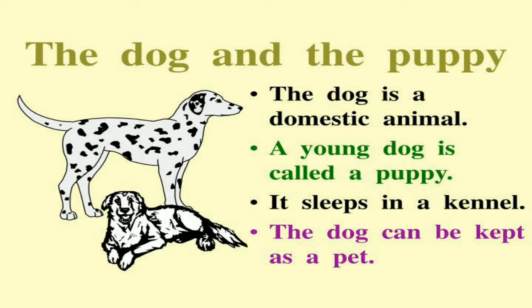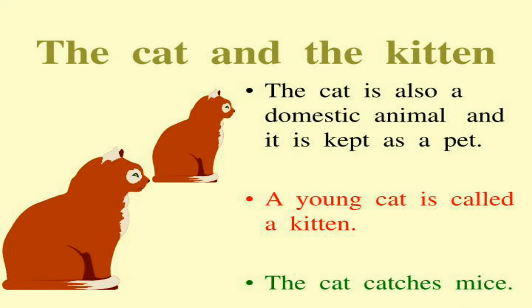So children, you all understand about the dog and the puppy — baby dog is called a puppy. Now let's learn about another animal: the cat and the kitten. The cat is also a domestic animal and it is kept as a pet.